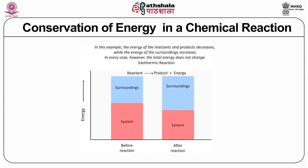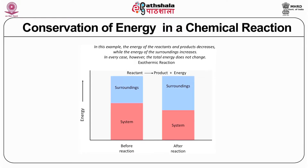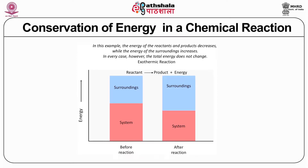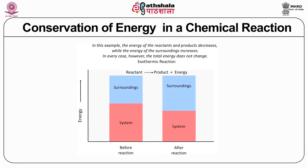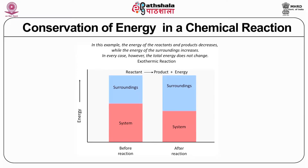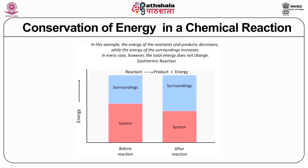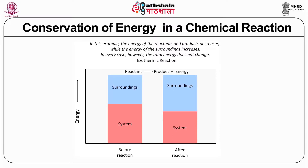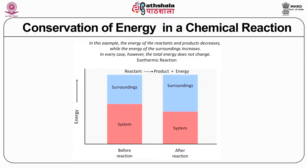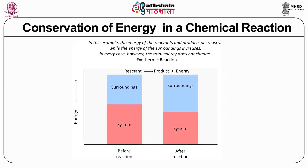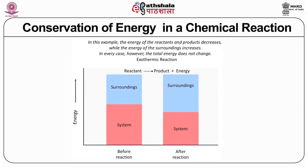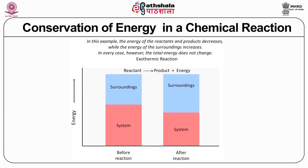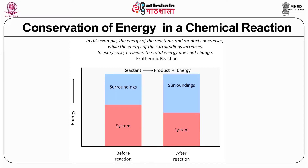Conservation of energy in a chemical reaction: the energies of the system and surroundings are quantitatively different before and after the reaction — there is an exchange of energy. The energy content in the system and surroundings differs, but the total energy remains the same. The energy of the reactant and product changes while the energy of the surrounding decreases; however, the total energy does not change.